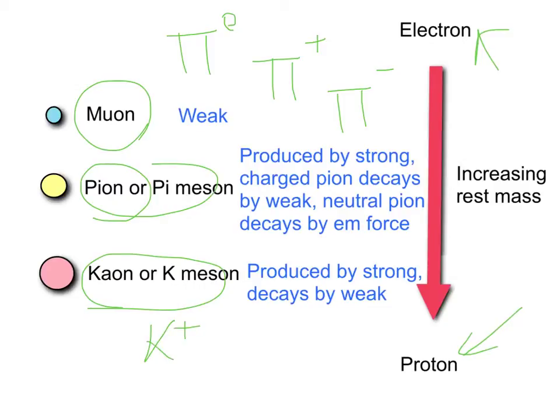Kaon produced by the strong force and it also decays by the weak force. Again, these are the kinds of symbols you will see for the kaon or k-meson: positive, negative and neutral.